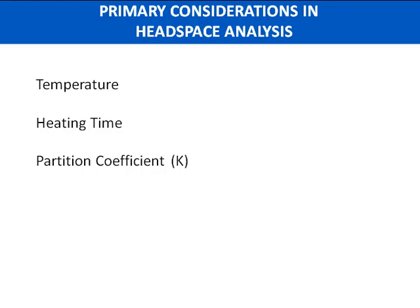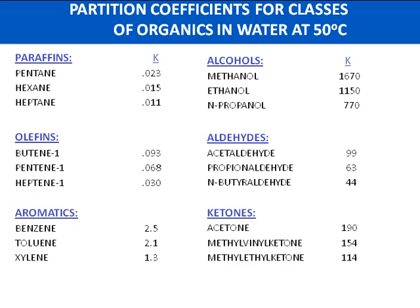The partition coefficient represents the ratio of the concentrations or solubilities of an analyte between the sample matrix and the solvent. Analytes with smaller K values will be least soluble in water — these tend to be your least volatile target analytes. However, they're going to be your most sensitive as well. The partition coefficient has factors that can affect it, including temperature and salinity. This is a good listing of partition coefficients for organics in water at 50 degrees Celsius. Notice that the alcohols, which are very soluble in water, are going to have the largest K values. This table gives you a complete understanding of the K value and the role it plays in headspace analysis.